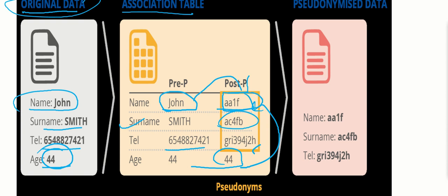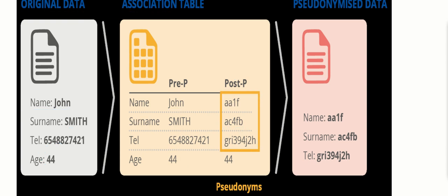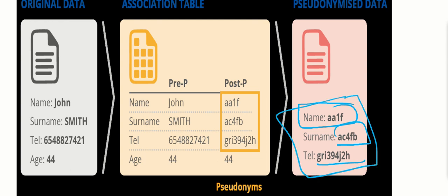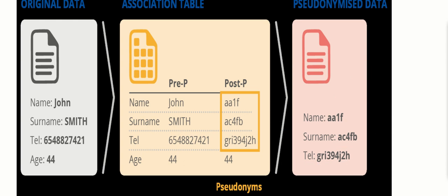This format is used to store data in the database and also to transfer the data. The pseudonymized data now has name 'AA1F', surname 'AC4FB', and a masked telephone number. No one is able to identify whose personal data has been collected or processed. This is a basic example of the pseudonymization of personal data.